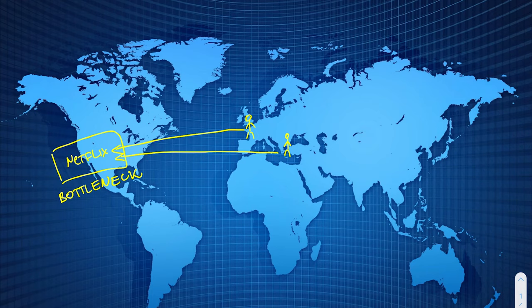The solution is to get people connecting to different points so that you don't have a single point of failure, but also to reduce the distance. If you're based in New York and want to watch Netflix, the distance your connection has to travel is much shorter than if you're based in Europe, so you download faster. This might be okay for many, but it doesn't translate well for places that don't have fast internet — so you want to minimize travel distance and improve the experience for users.